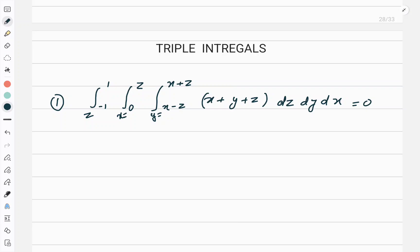So now using this, we will start the work. First I need to integrate with respect to y, so I'll write dy here. Then I should integrate with respect to x, and last with respect to z. That should be the order of integration. So let us start with the first integral: from zero to z for x.